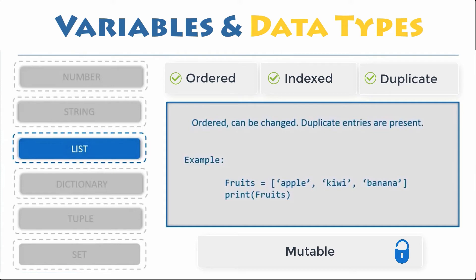Declaring a list is pretty straightforward. Items separated by commas are enclosed within square brackets. A single list may contain data types like integers, strings, as well as objects.